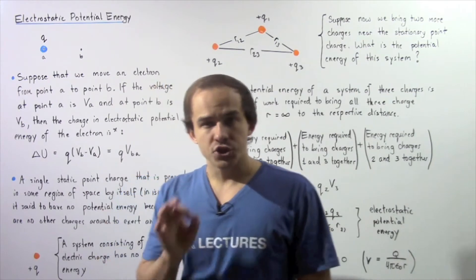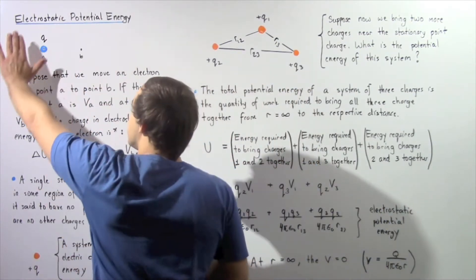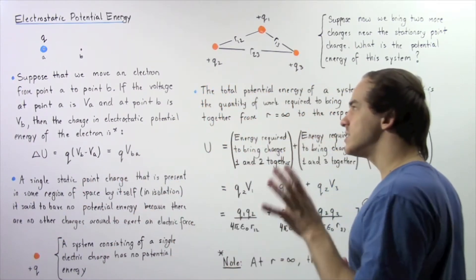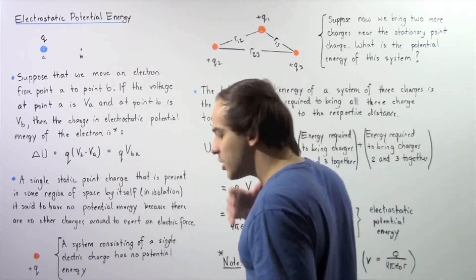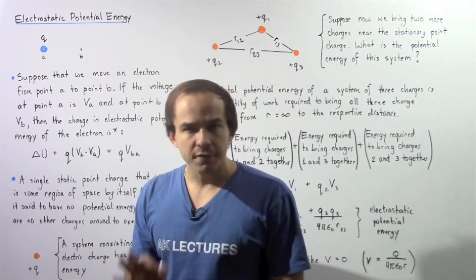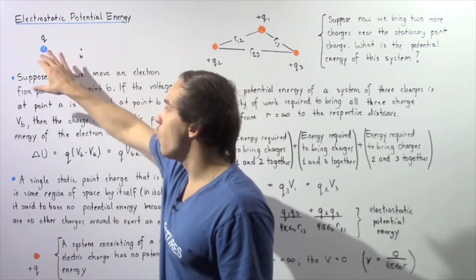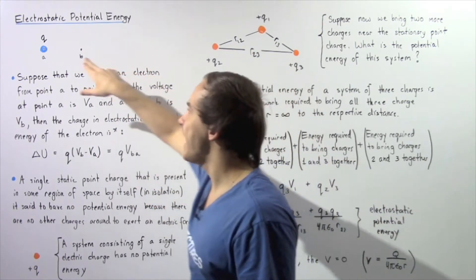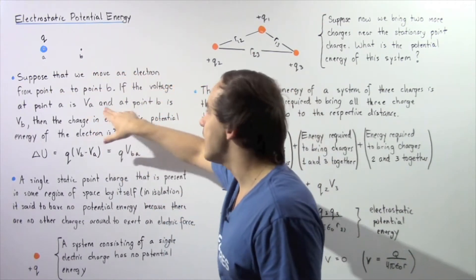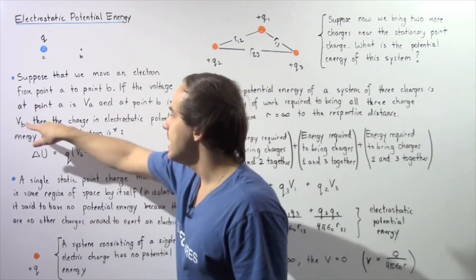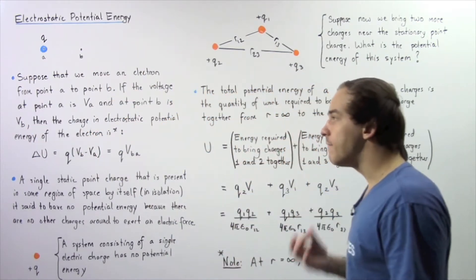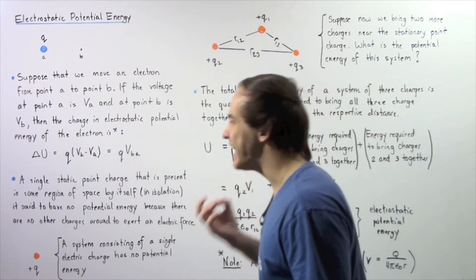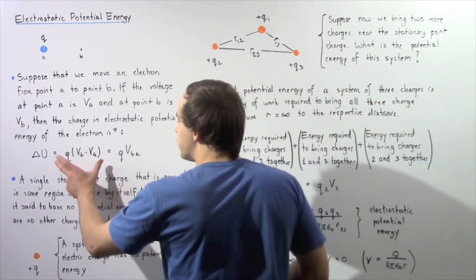Now there are other charges that are present around this electron, and those charges are not shown. As a result of those charges, there will be a voltage difference — an electric potential difference — between point A and point B. So if the voltage at point A is given by Va and the voltage at point B is given by Vb, then we define the change in electrostatic potential energy of the electron in the following form.